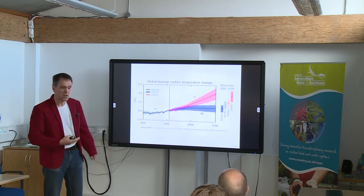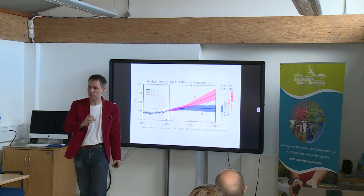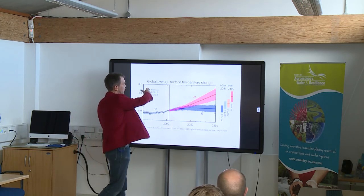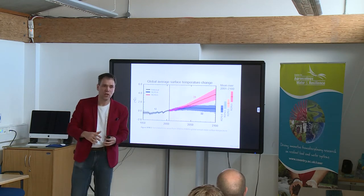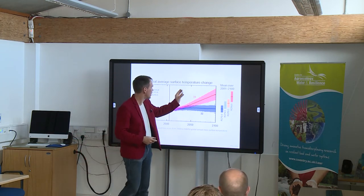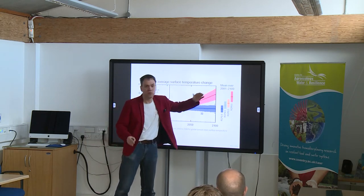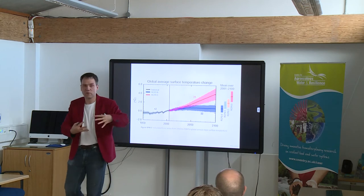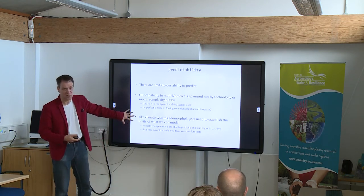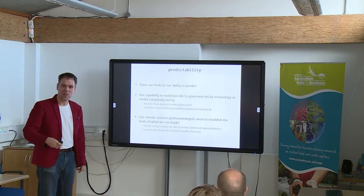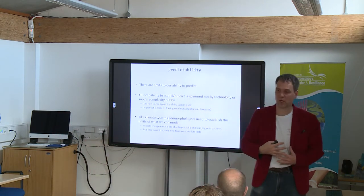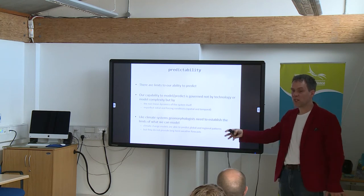It is a different type of predicting. These climate models are not making specific predictions about what the weather will be in a particular place on a specific day in 2074. These are predictions about global average surface temperature, or average temperature in northwestern Europe over a decade. You do not make predictions for individual points in time — you look at averages over two decades and larger regions. Maybe that is something geomorphologists need to start considering — accepting you cannot make specific predictions about a specific river bend over a long period.